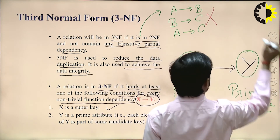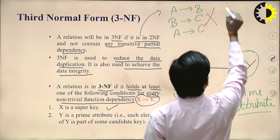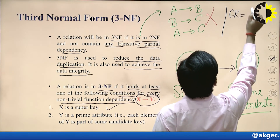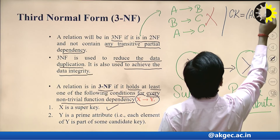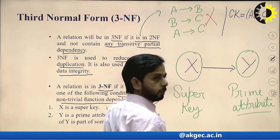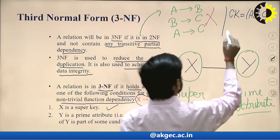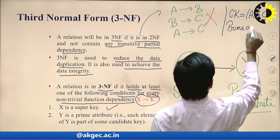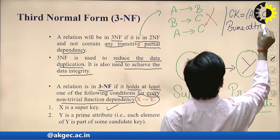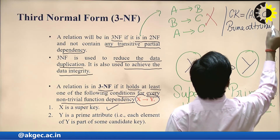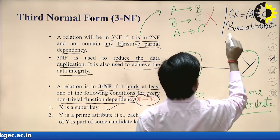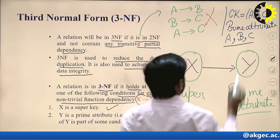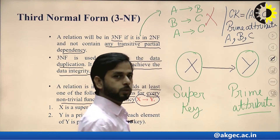Suppose there is a candidate key or primary key containing attributes A, B, C. The prime attributes are those attributes which are in the candidate key or primary key. So A, B, and C are all prime attributes.